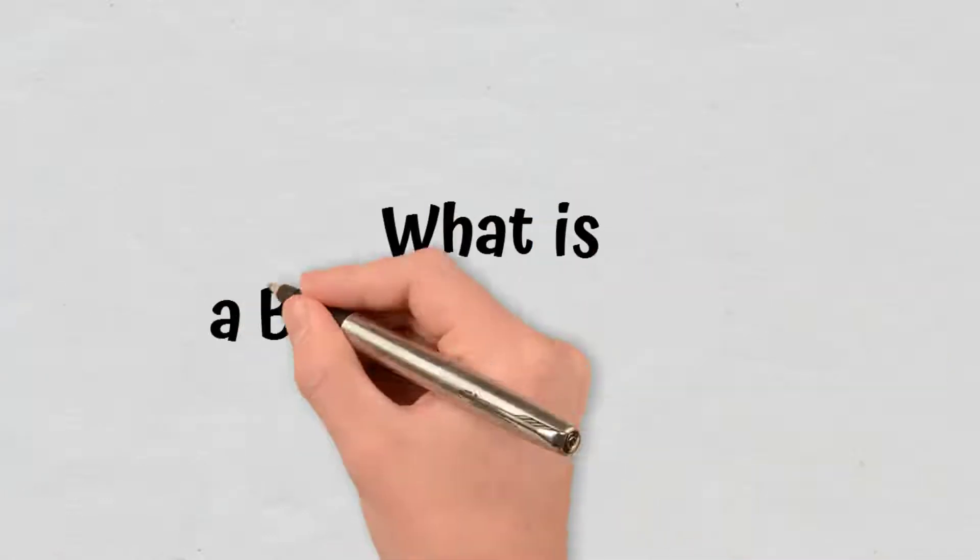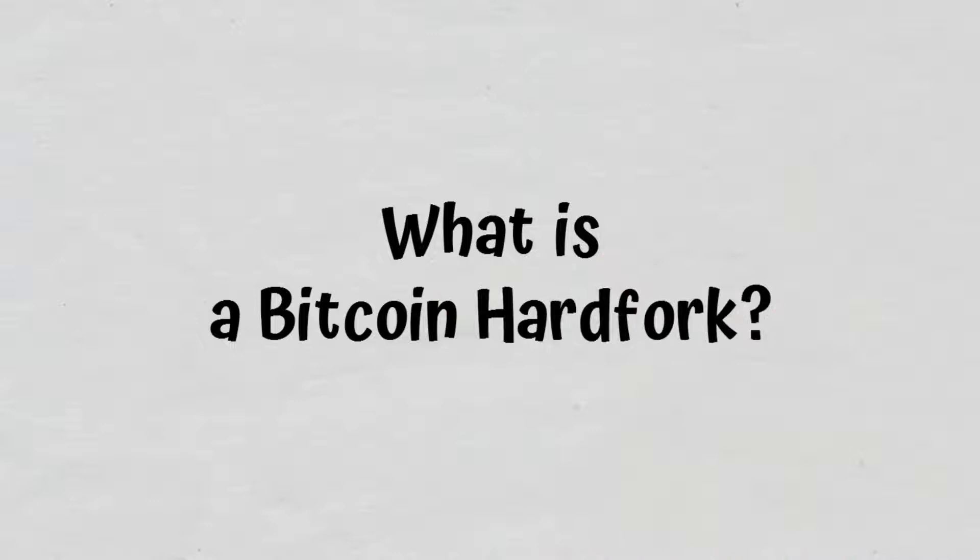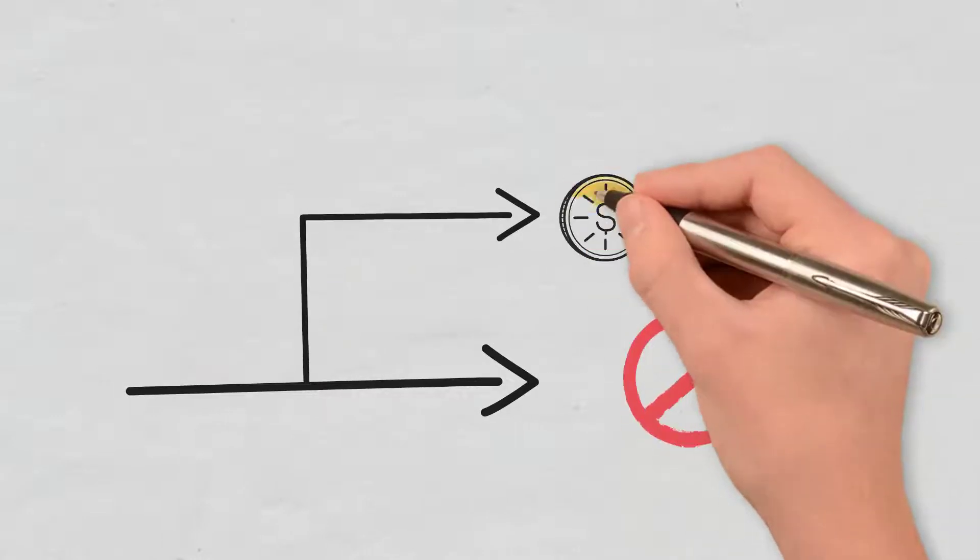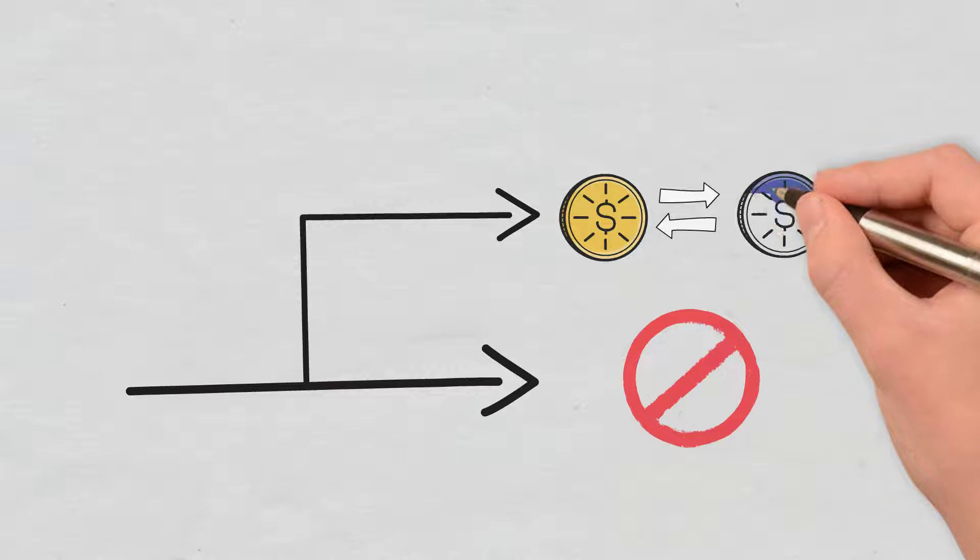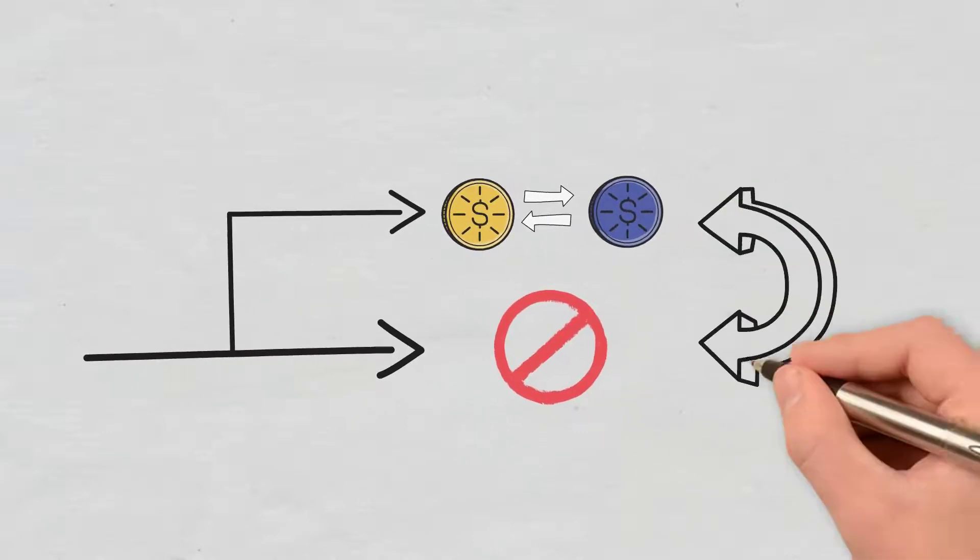So, what is a Bitcoin hard fork? A hard fork represents a radical change to the network of a protocol that makes previously invalid blocks and transactions valid, or the other way around.